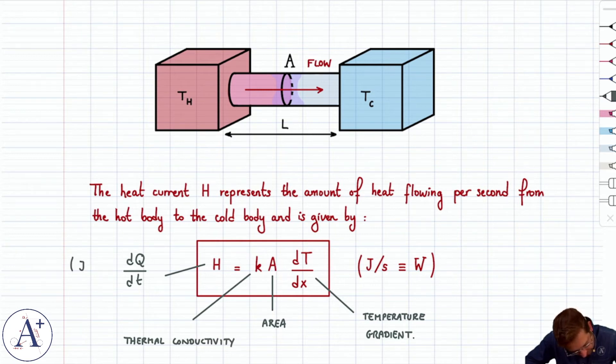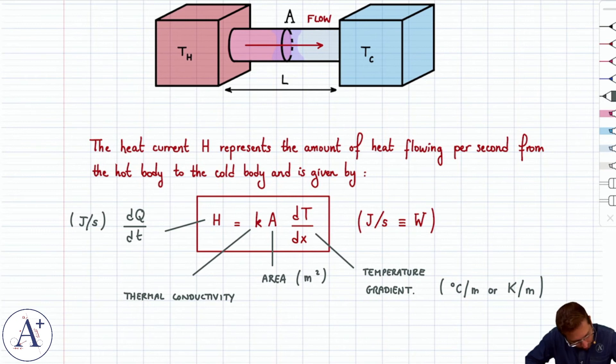In terms of units, this is joules per second or watts. Area, of course, is meters squared. Temperature gradient is going to be in degrees Celsius per meter or degrees Kelvin per meter. And then thermal conductivity is going to be in watt per meter Kelvin.